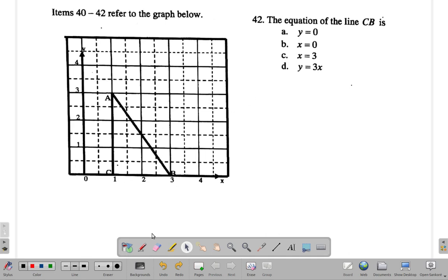That's the general equation of a straight line. CB is a straight line, so it's y equals mx plus c, where m is the gradient and c is the y-intercept.